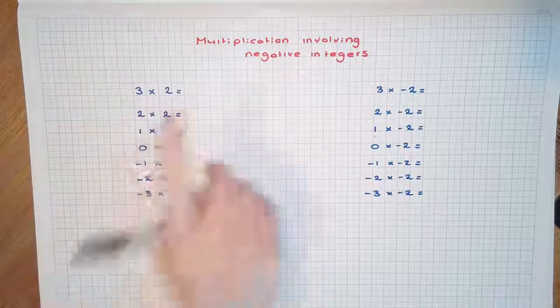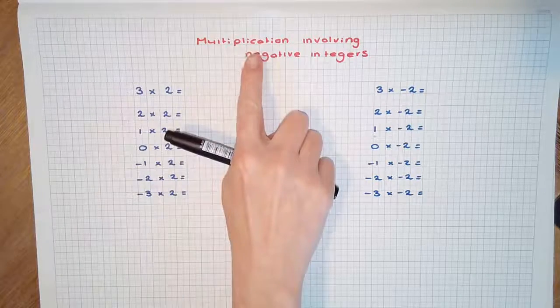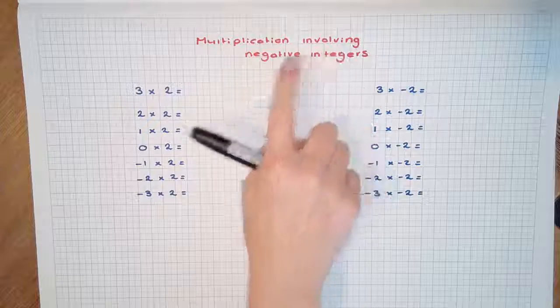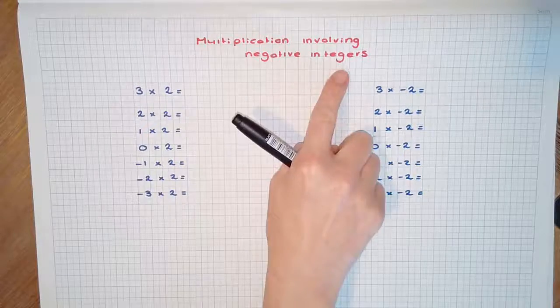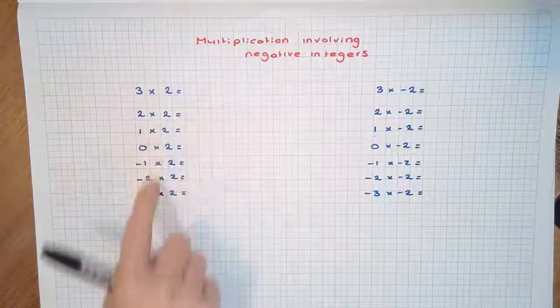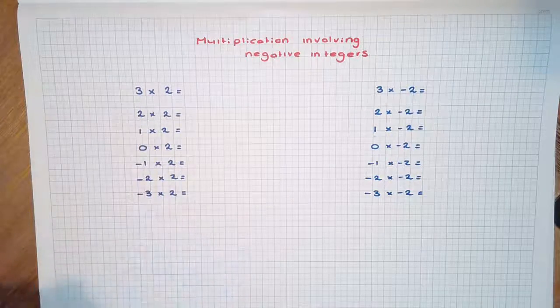In this video we're going to have a look at multiplication involving negative integers. Let's try this pattern.